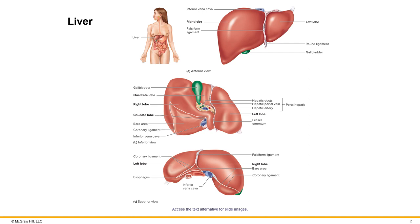Hello everyone, this is the digestive accessory structures lecture. We are going to start off with the liver. The liver is a large accessory structure and it is located in the upper right quadrant of the abdominal cavity.